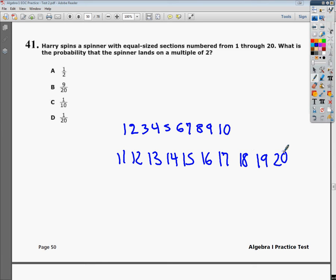1 through 20. What is the probability that the spinner lands on a multiple of 2? This is not a difficult question at all. The only thing that might be hard, somebody mentioned to me, is that it says multiple of 2.